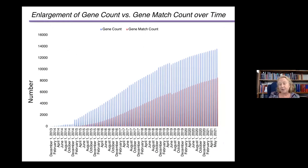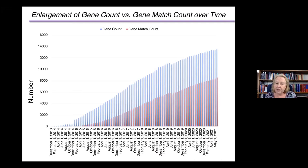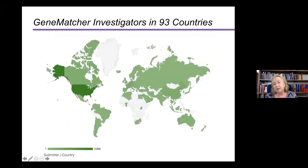The number of genes continues to rise every month and the number of matched genes continues to rise, keeping a steady proportion of about 60 to 62 percent in the last several months. A small decline visible in the data is because we eliminated dead email addresses, so you wouldn't match to someone who wouldn't follow up. GeneMatcher investigators, researchers, patients, and others are from all over the world, including large portions of South America and some participation from Africa.